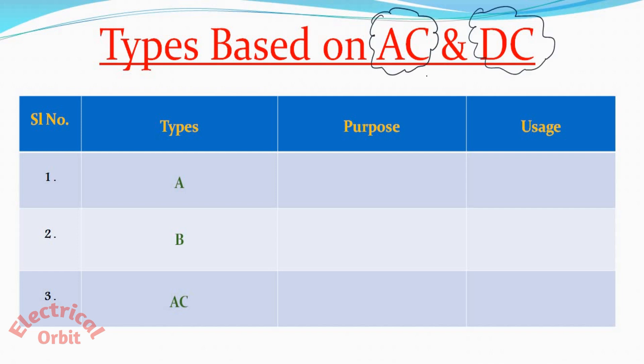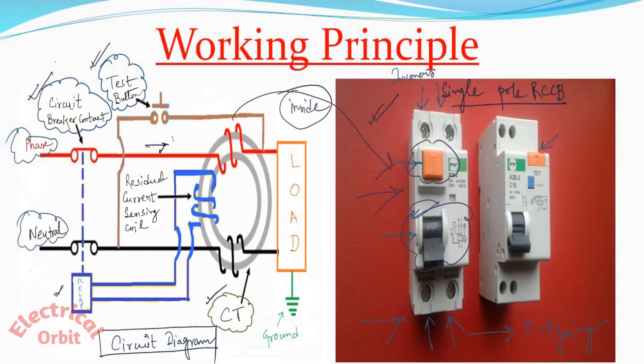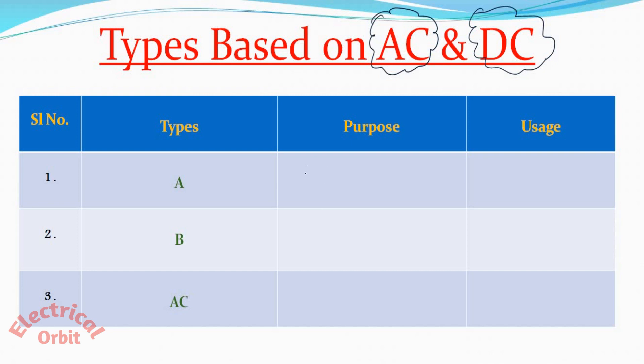Now there is an important classification based on input AC and DC. For type A, if there is input current or the phase current is coming here AC plus DC pulse, then you have to use A type of RCCB. Now type B is if your phase current is a mix of AC plus plane DC, then you should go for B type of RCCB in your circuit. And if your input is plane AC, then you should connect AC type of RCCB in your circuit. So you can just memorize like this: for plane AC your RCCB is AC type, and rest of the A and B is a mixture of AC plus DC.